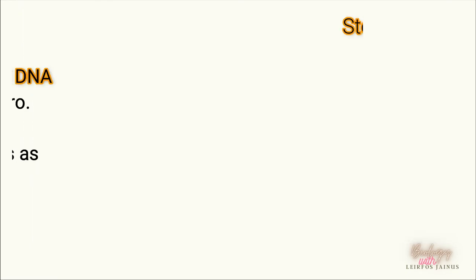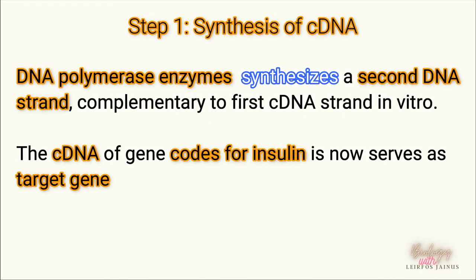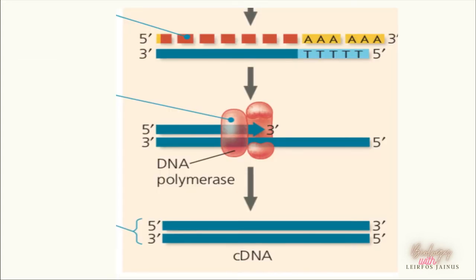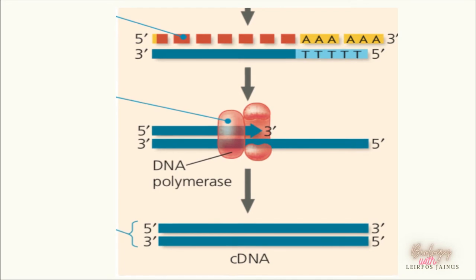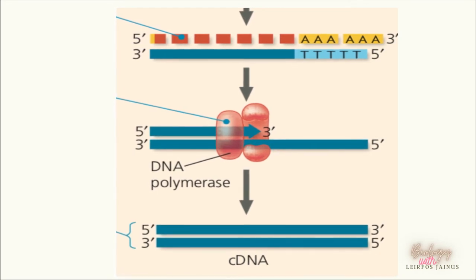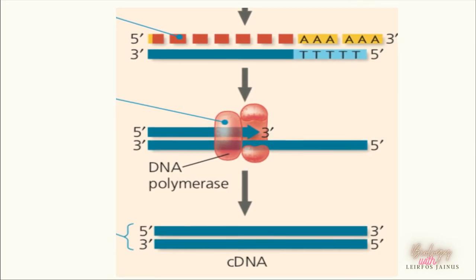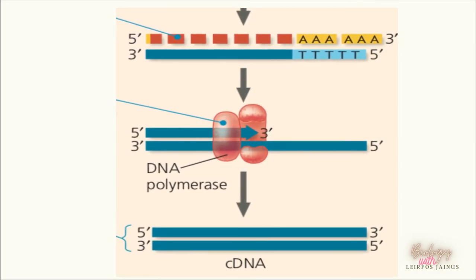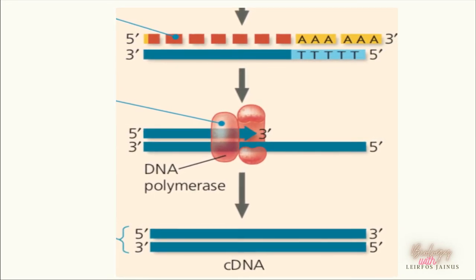DNA polymerase will then synthesize a second DNA strand complementary to the first single-stranded DNA. When the process is complete, the cDNA gene that codes for insulin is ready to serve as a target gene.